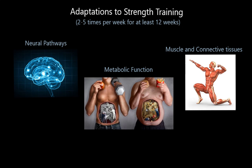Hi folks, welcome to this video on adaptations to strength training, one of four videos to do with strength training. We're going to look very briefly at whether you should do a lot of strength training, what the adaptations will be to your neural pathways — the brain and its connection to the muscles — what it's going to do to your muscles themselves and your connective tissue like ligaments and tendons, and also what it's going to do to your metabolism — the rate at which we burn calories. It's worth knowing that to see adaptations to these three systems, we're looking at strength training two to five times a week for at least 12 weeks. Anything less than that and we won't see any of these adaptations.